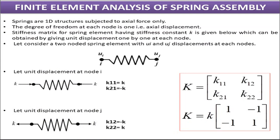Like bar or rod truss structures, springs are also a one-dimensional structure which is a mechanical device only for elongation or compression — that is axial forces. Springs are subjected to only axial forces and because of that there is only one displacement, that is the axial displacement. The degree of freedom at each node is only one, referred to by the letter U.